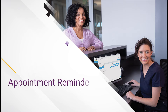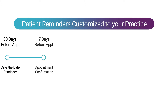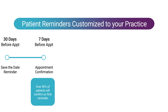With automated patient reminders, our goal is to prevent reschedules, no-shows, and late-shows. We start by sending a save-the-date message 30 days before the appointment to ensure the patient has it saved on their calendar. Seven days before their appointment, we send a text and email asking the patient to confirm. When the patient confirms with Patient Manager, we'll mark that appointment as confirmed in your practice management software, with no action required by your team.